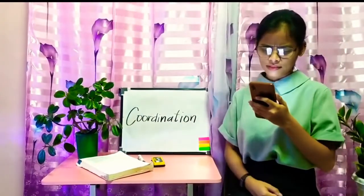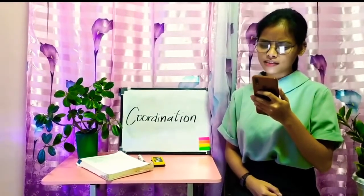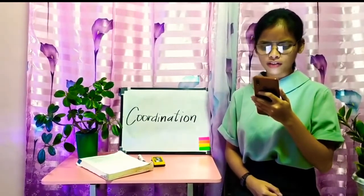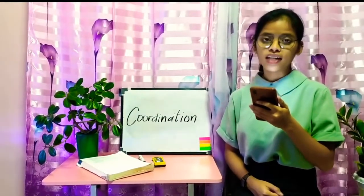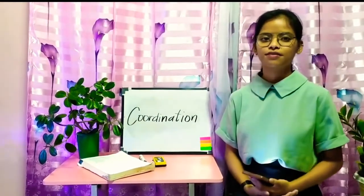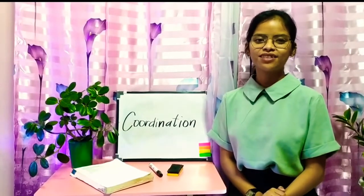Coordination is the ability to integrate multiple body components for effective movement. For example, juggling. Here's a photo of the example. We need 3 to 4 balls for juggling.